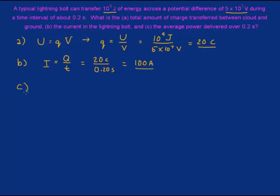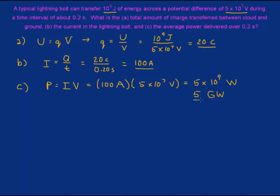And finally, what's the power? And the power here we'll just go straight up with power equals current times voltage. And we have a current of 100 amperes and a voltage of 5 times 10 to the 7 volts, which is going to give us 5 times 10 to the 9 watts, otherwise known as 5 gigawatts. That is a lot of power.